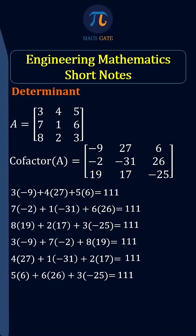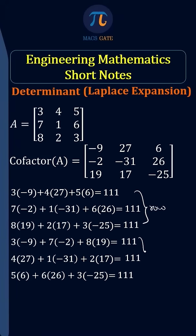Dear friends, we can find the determinant of a square matrix by multiplying any row or any column elements with corresponding cofactors and adding. These expansions are known as Laplace expansions. The first three are known as row expansions, whereas the last three are known as column expansions.